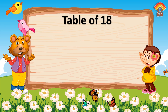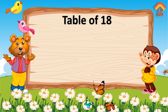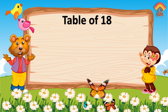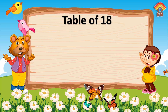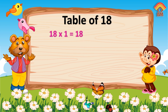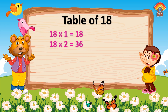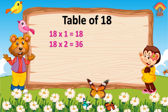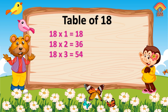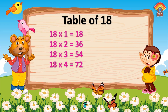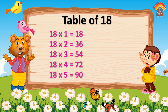Table of 18. 18 ones are 18. 18 twos are 36. 18 threes are 54. 18 fours are 72. 18 fives are 90.